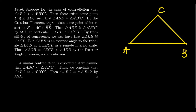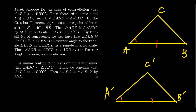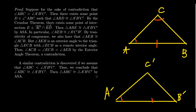We have our first triangle — we'll call it ABC — and our second triangle below, with vertices labeled C', B', and A' by correspondence. Our assumptions are: segment AB is congruent to segment A'B'; angle CAB is congruent to angle C'A'B'; and angle ACB is congruent to angle A'C'B'.